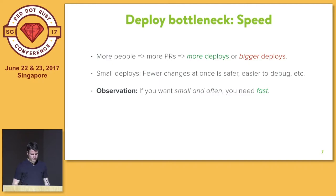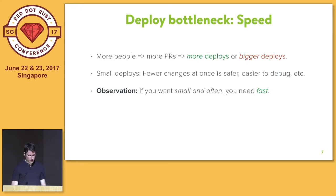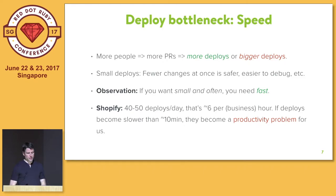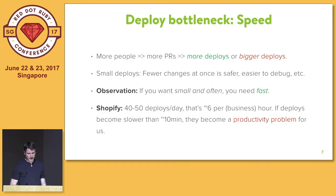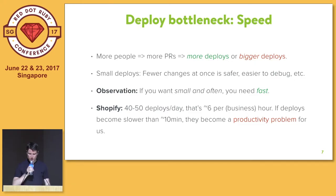If you want small deploys and you want to deploy often, you need your deploys to be fast. We deploy about 50 times per day. Most of our developers are in the same time zone, so that's about six deploys per business hour. If those deploys take longer than 10 minutes, they become a serious productivity problem because we can't ship code as fast as we want to, and that means we can't develop features as quickly as we want to.